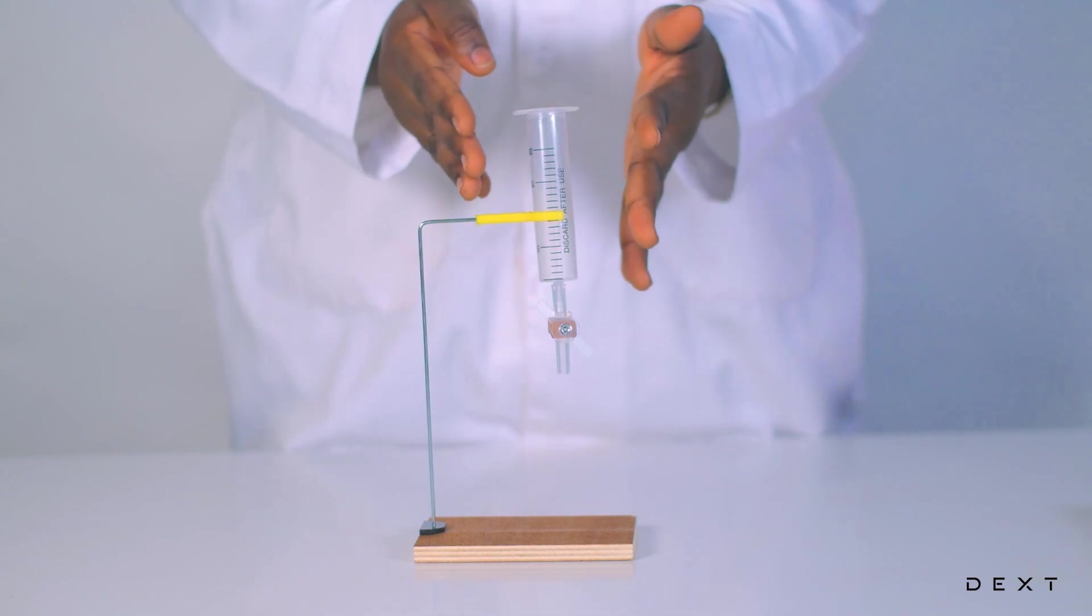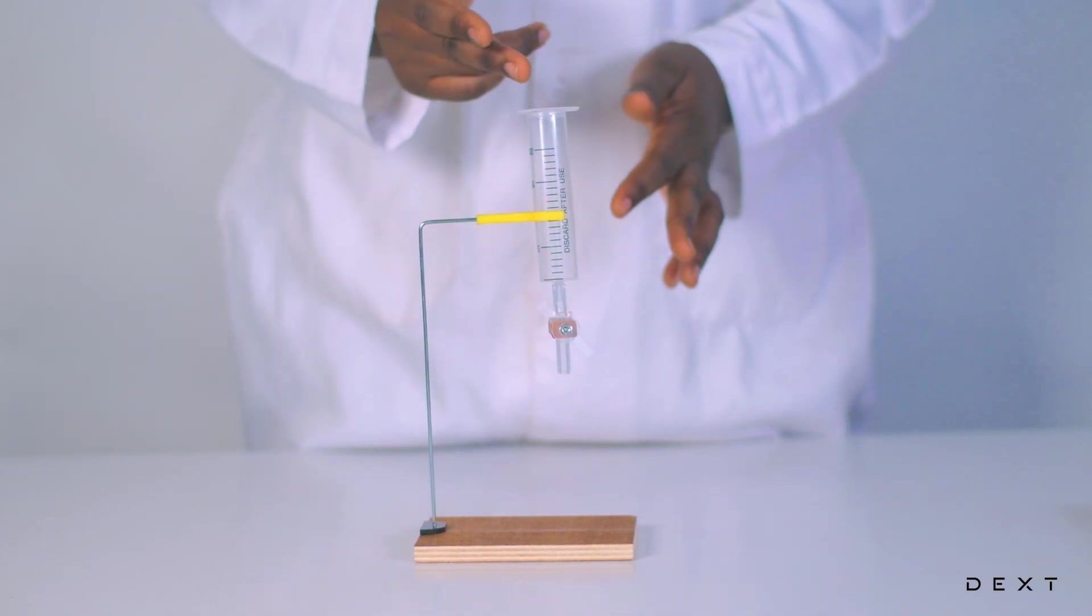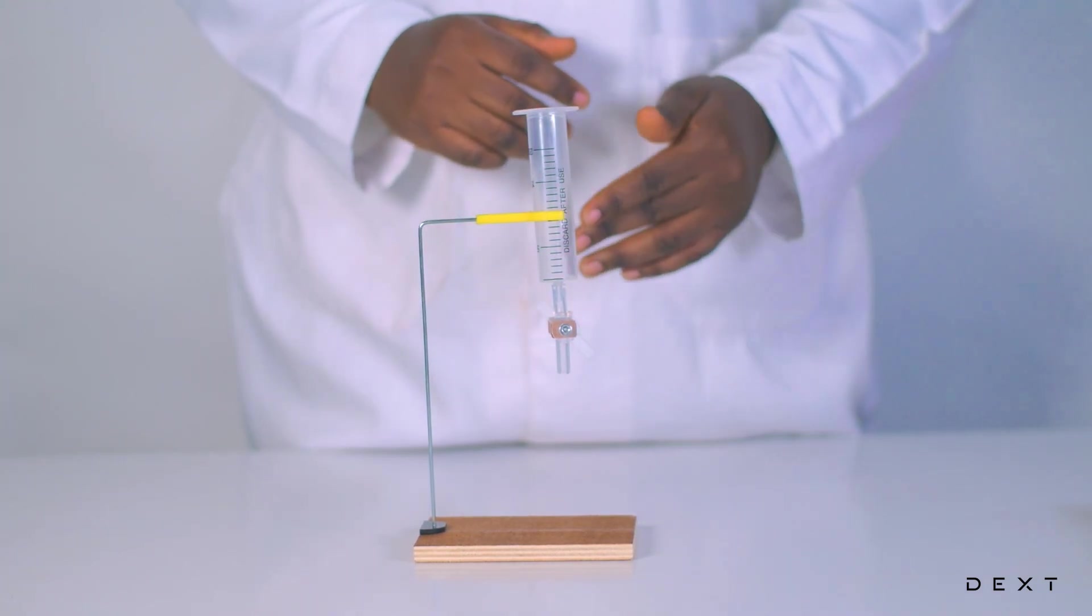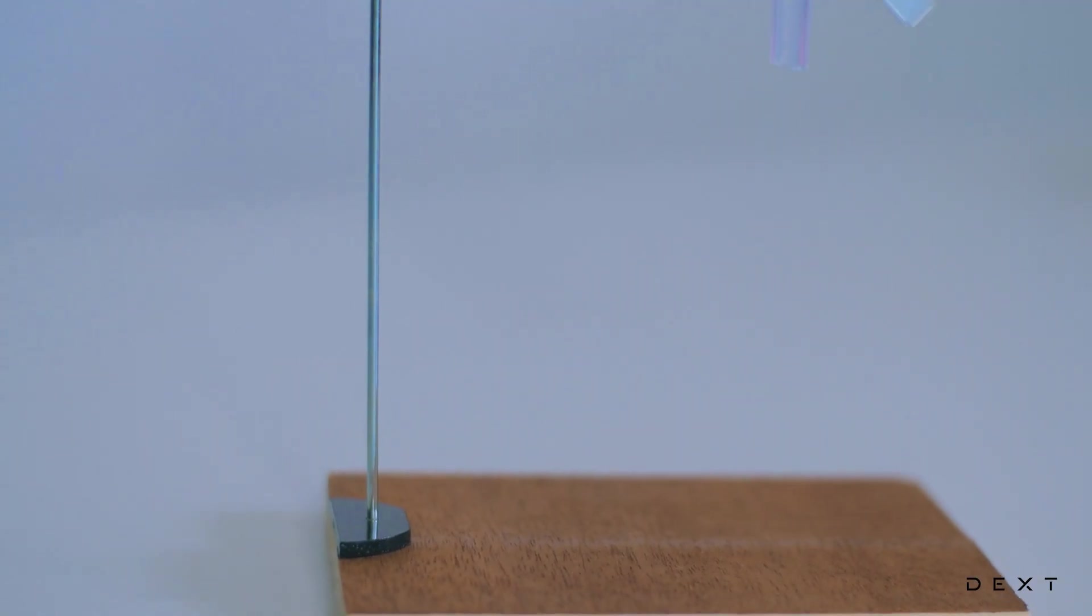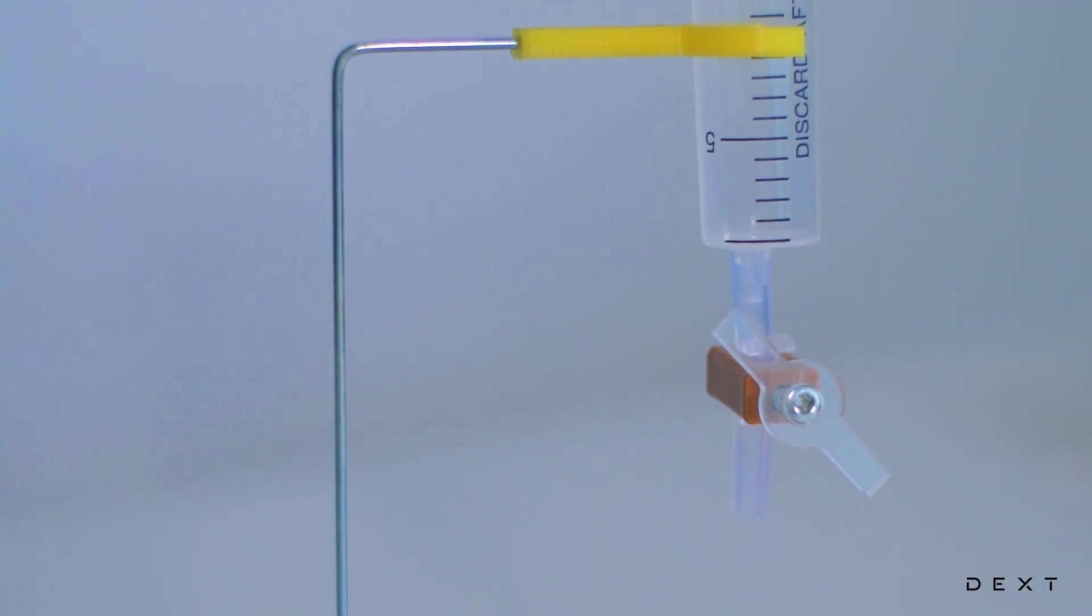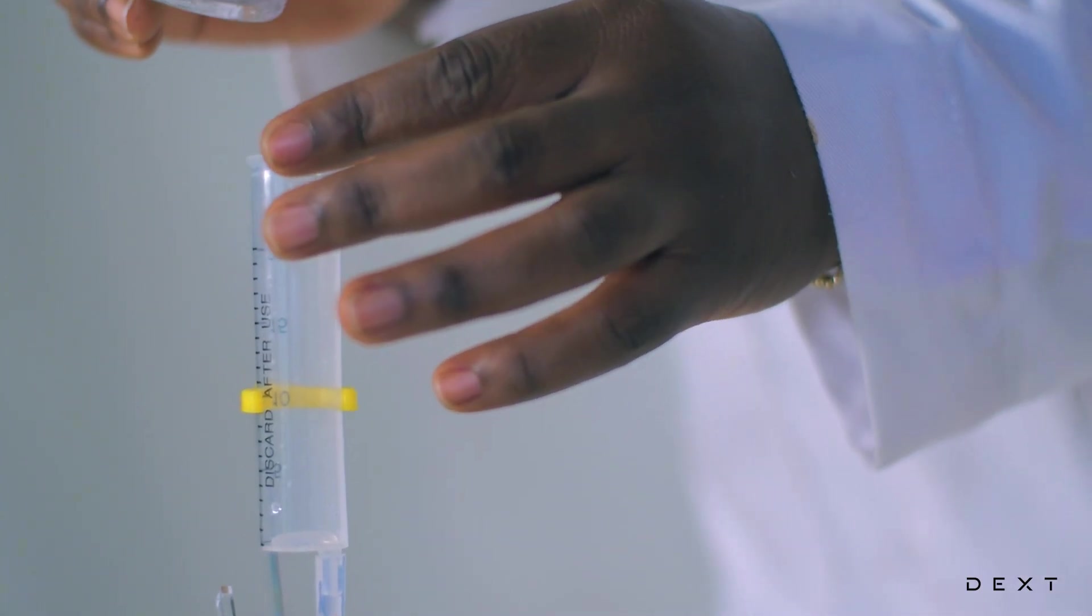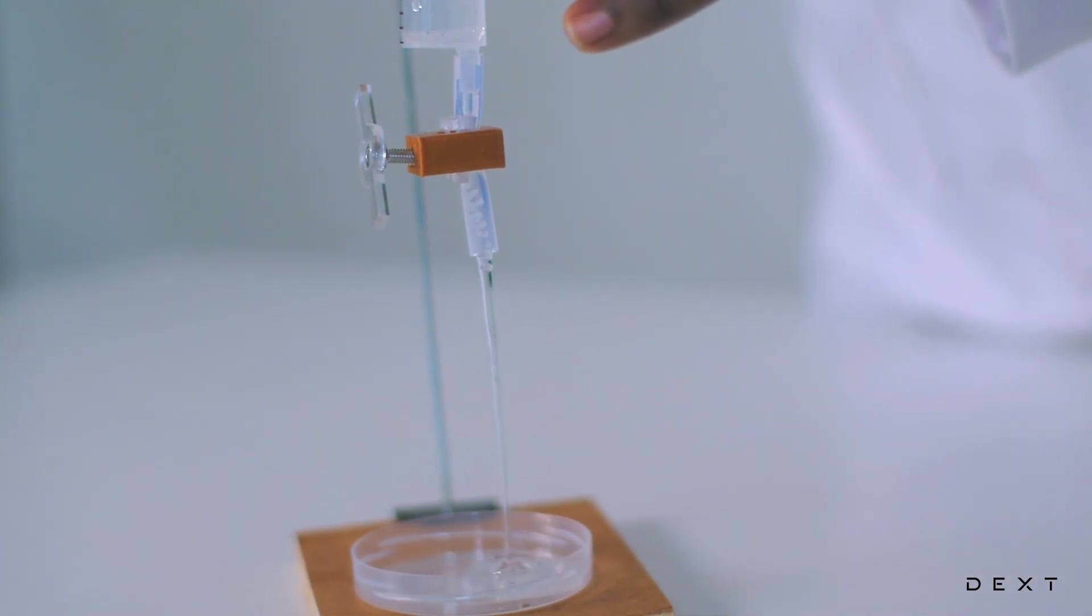First, we would have to test for leakages. So what we'll do is to pour some water here and try and tighten the tap. To test this, pour a little water into your improvised separating funnel and check if it's leaking.